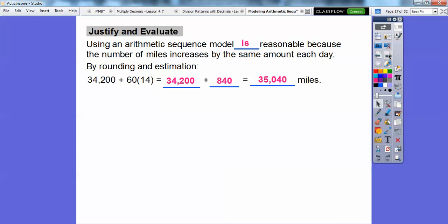So by rounding to estimate, we round that 34,240 to 34,200, and this was our 57, it rounded to 60. So if we just did a quick rounding right here, 6 times 14, well 6 times 7 is 42, so 6 times 14 is double 42 or 84. So 60 times 14 is 840 right there.